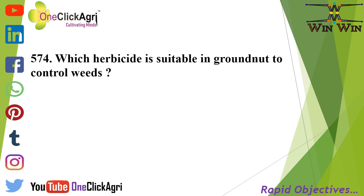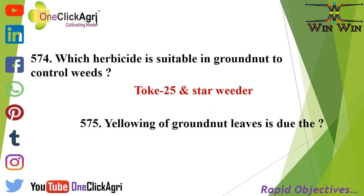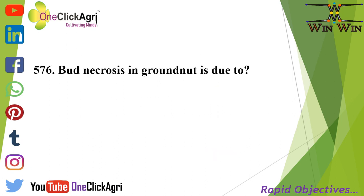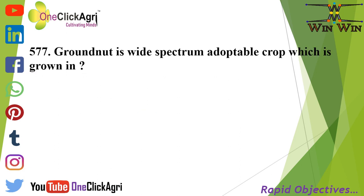Which herbicide is suitable in groundnut to control weeds? Tok 25 and Star Weeder. Yellowing of groundnut leaves is due to iron deficiency. Bird necrosis in groundnut is due to thrips.